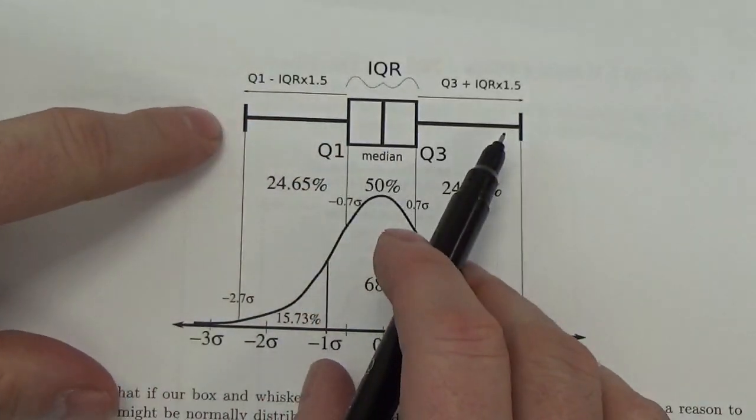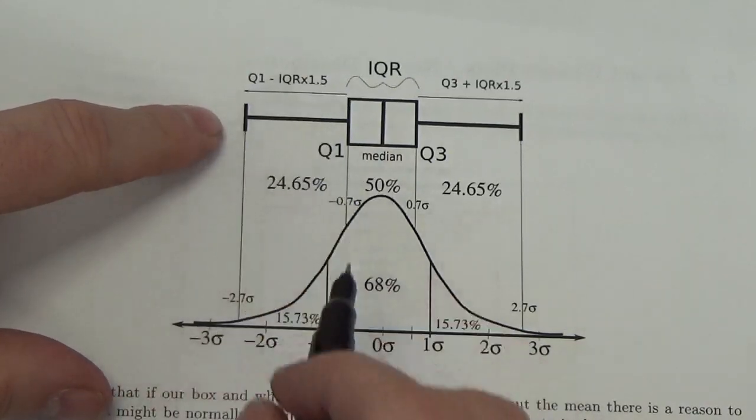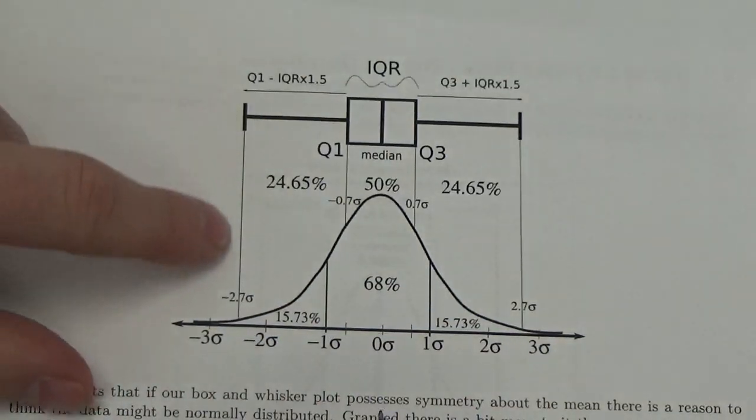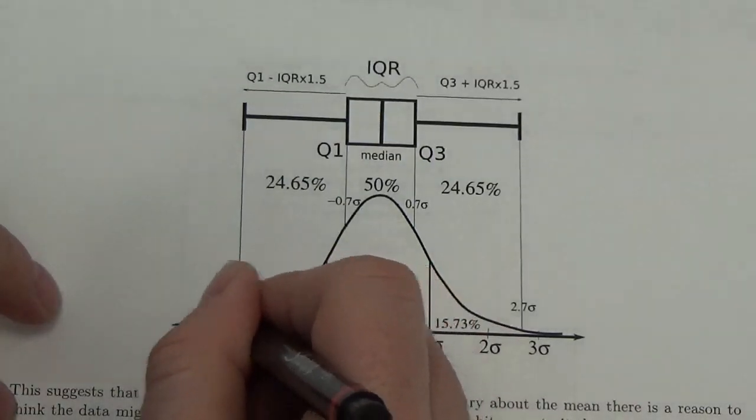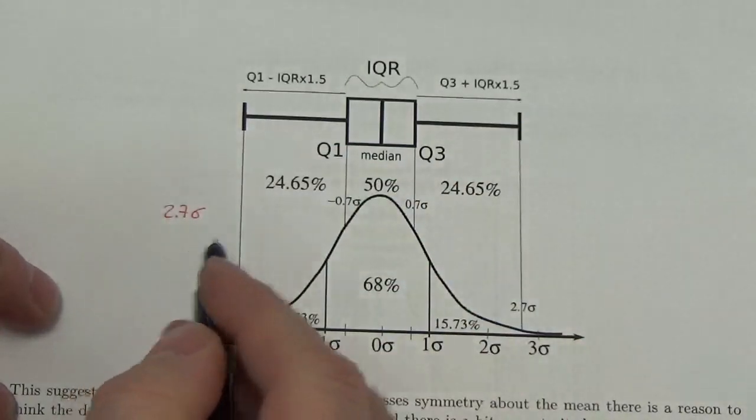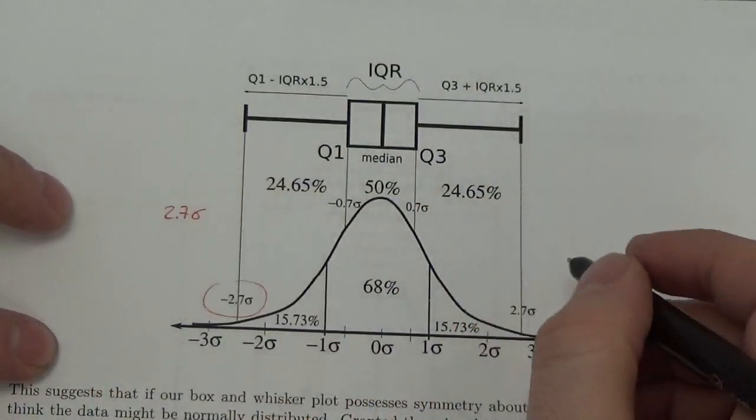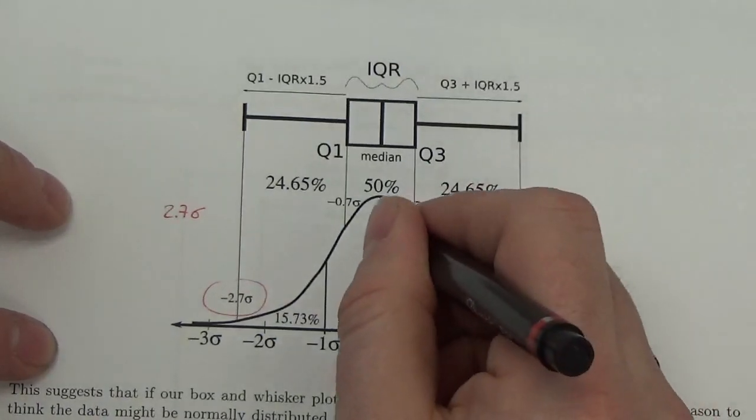But now, if I go the first quartile minus 1.5 times the interquartile range, I get out here, and that is roughly, take a look at that here, 2.7 standard deviations back from the mean. Forward, that's 2.7 standard deviations forward from the mean.